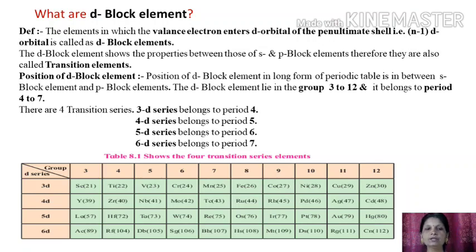The 5d series includes lanthanum, hafnium, tantalum, tungsten, rhenium, osmium, iridium, platinum, gold, and mercury.